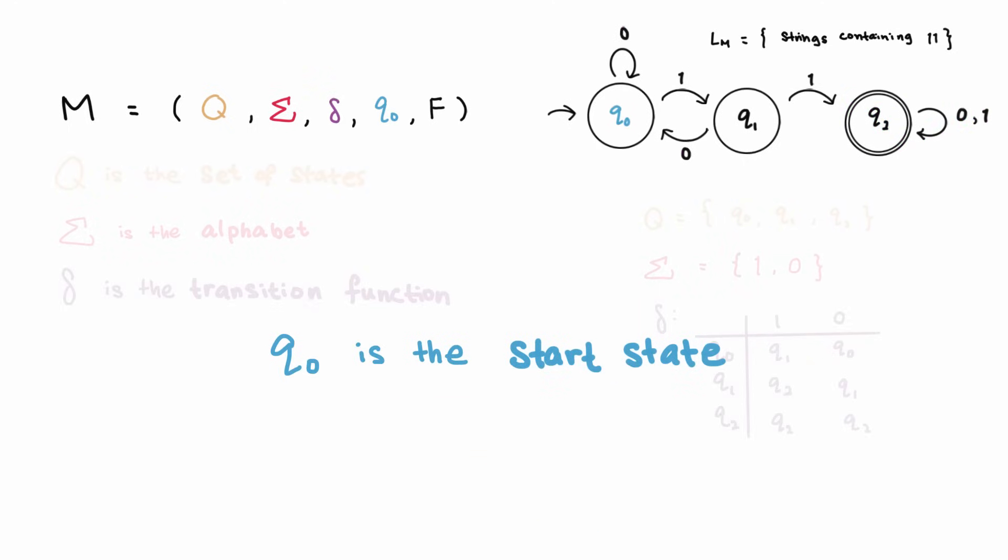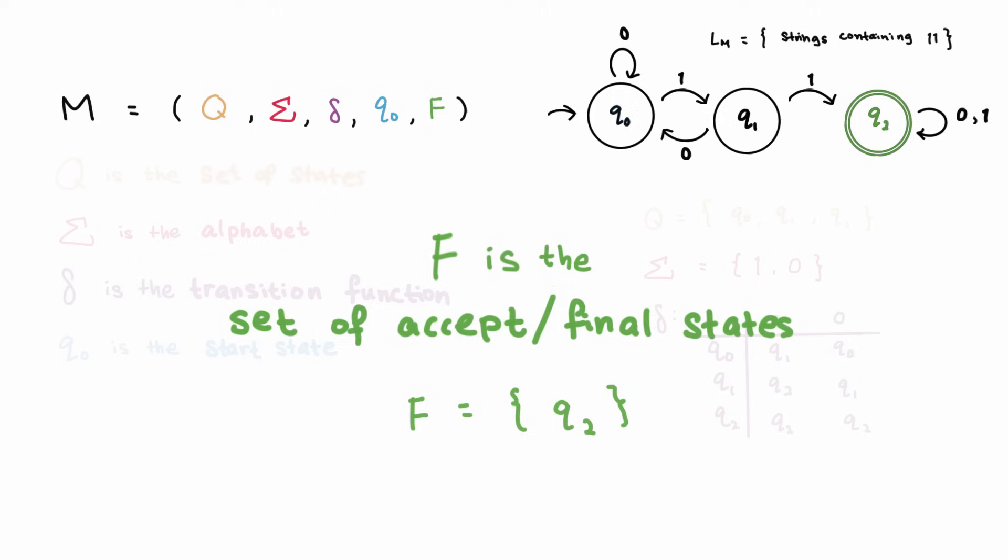Q0 is the start state. And finally, F is the set of accept states, also known as final states sometimes, which in this case would just be the set containing Q2.